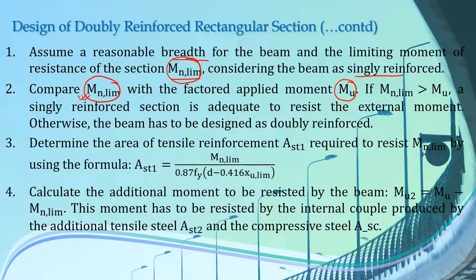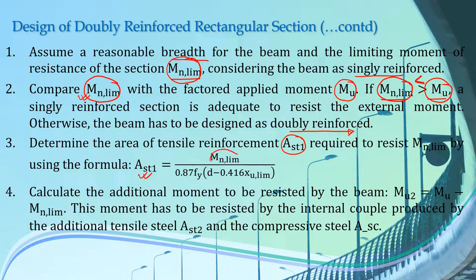If the limiting moment of resistance of the beam considering a singly reinforced section is greater than the applied moment, then a singly reinforced section is adequate. But if the externally applied moment is greater than the limiting moment of resistance of a singly reinforced section, then the beam has to be designed as doubly reinforced. After determining that we need a doubly reinforced beam, calculate the value of AST1 using the formula: MU limiting divided by 0.87 FY times (D minus 0.416 times XU limiting).